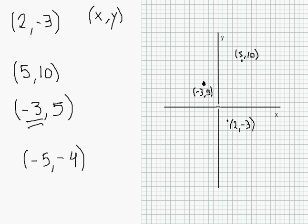So, 1, 2, 3, 4, 5. 1, 2, 3, 4. Right here. Negative 5, negative 4.